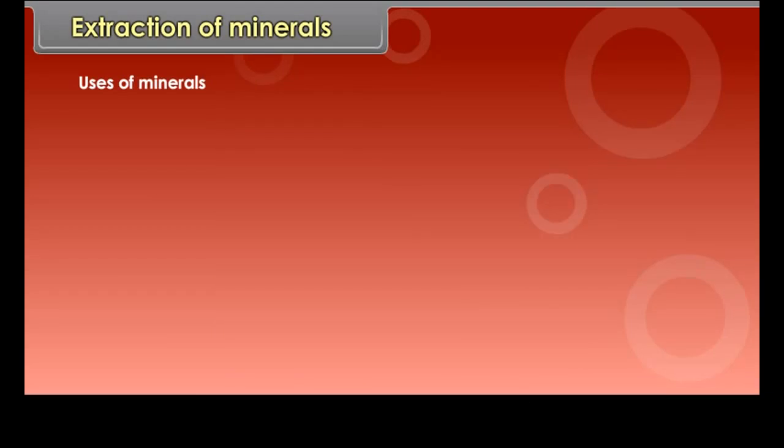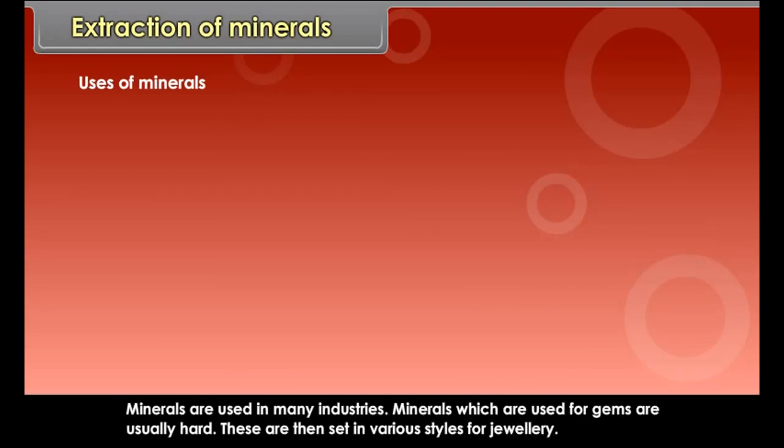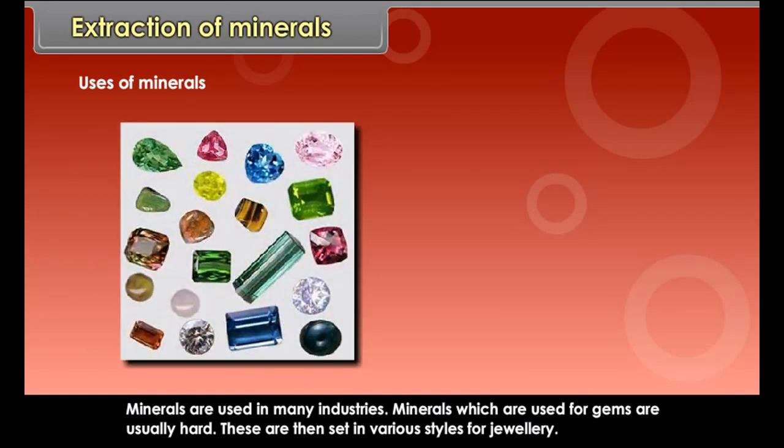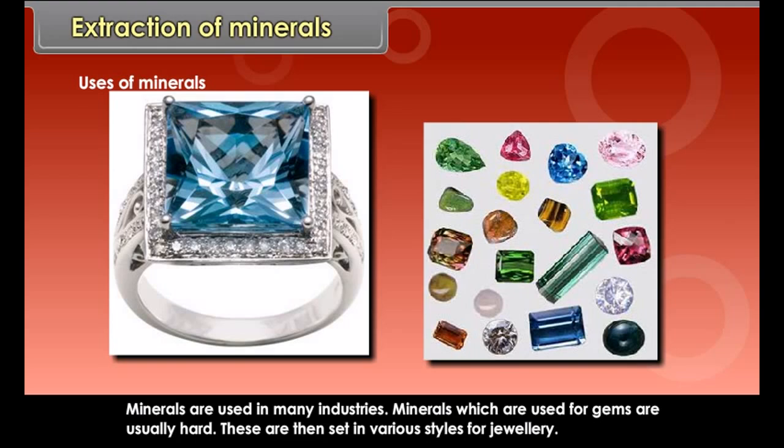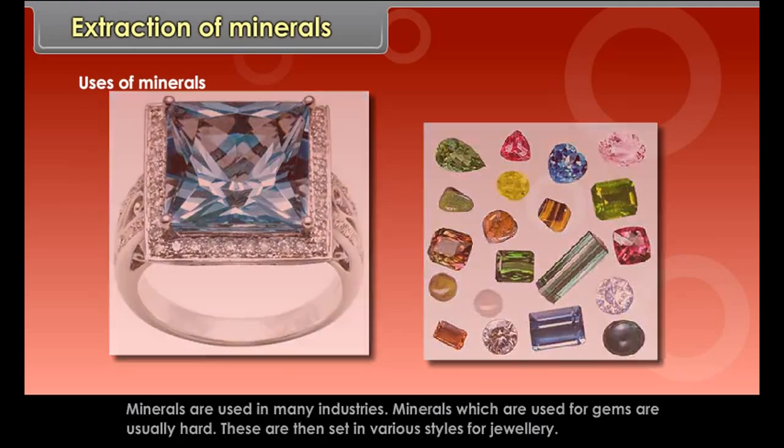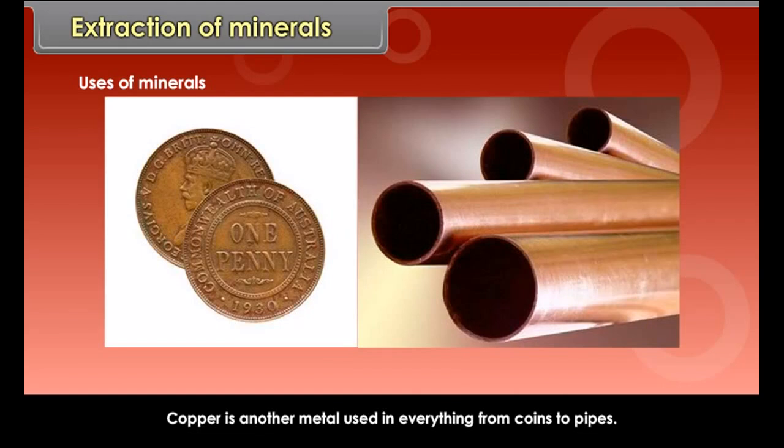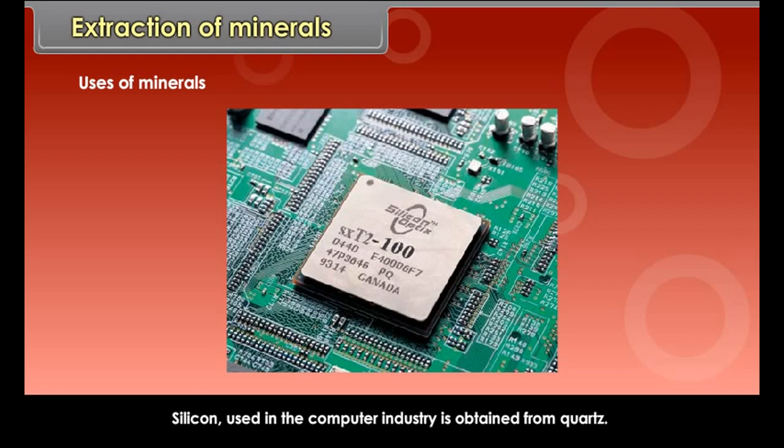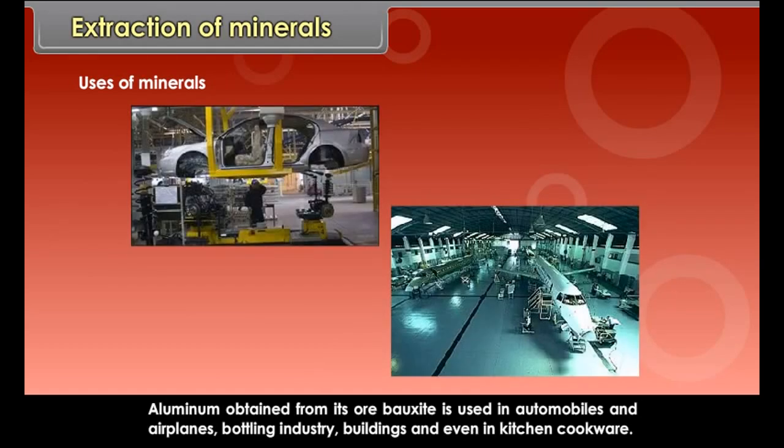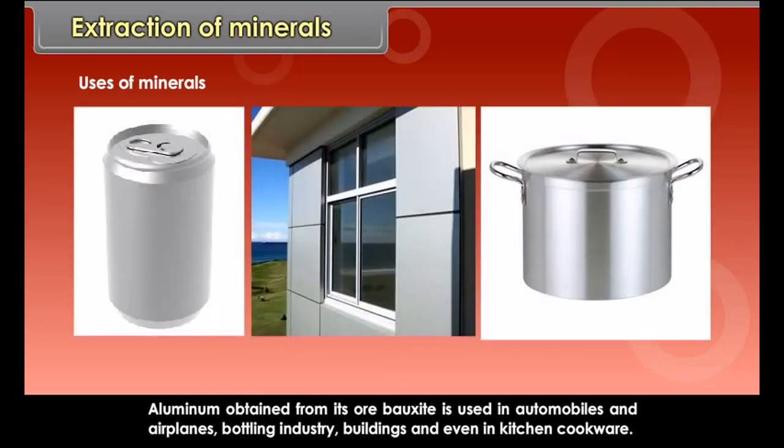Uses of minerals. Minerals are used in many industries. Minerals which are used for gems are usually hard. These are then set in various styles for jewelry. Copper is another metal used in everything from coins to pipes. Silicon used in the computer industry is obtained from quartz. Aluminum obtained from its ore bauxite is used in automobiles and airplanes, bottling industry, buildings and even in kitchen cookware.